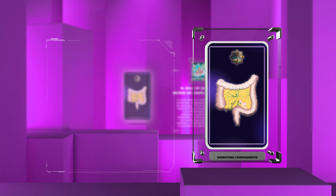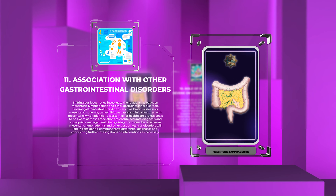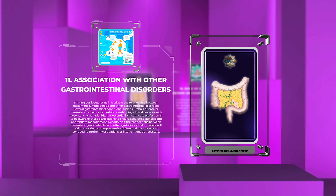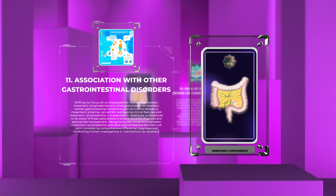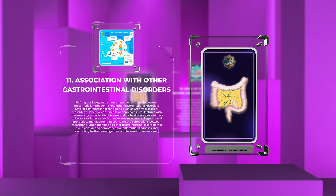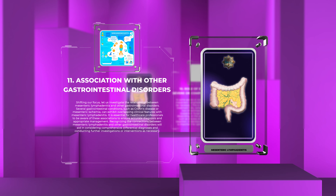Let us investigate the relationship between mesenteric lymphadenitis and other gastrointestinal disorders. Several gastrointestinal conditions, such as Crohn's disease or mesenteric ischemia, can exhibit overlapping clinical features with mesenteric lymphadenitis. It is essential for healthcare professionals to be aware of these associations to ensure accurate diagnosis and appropriate management, including considering comprehensive differential diagnoses and conducting further investigations or interventions as necessary.